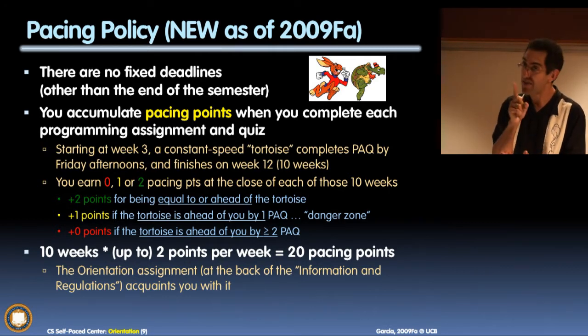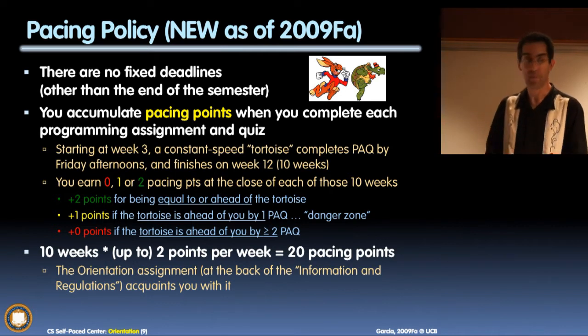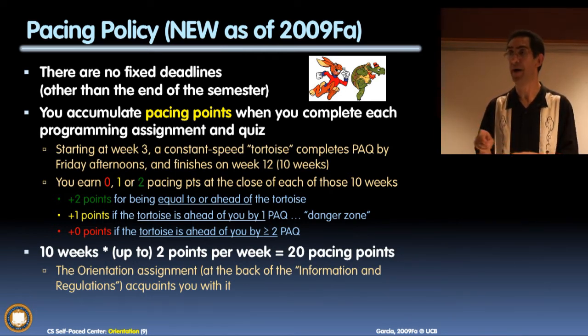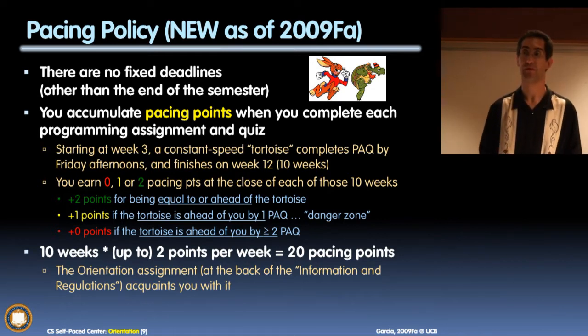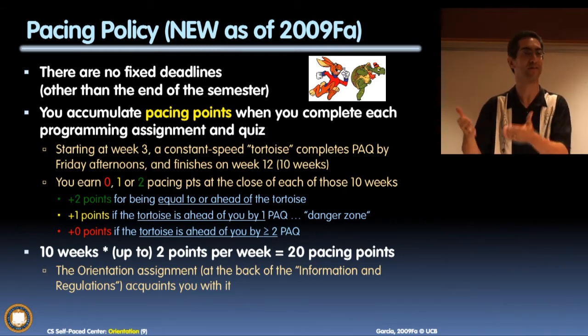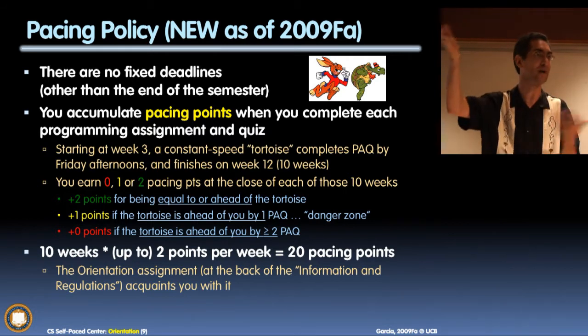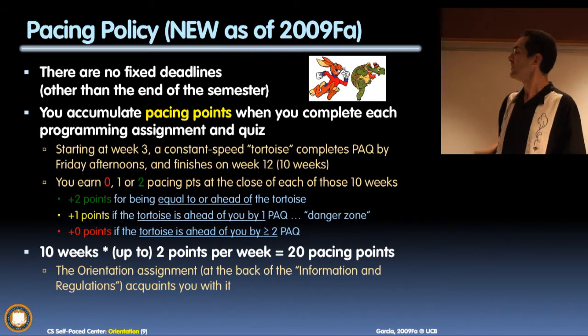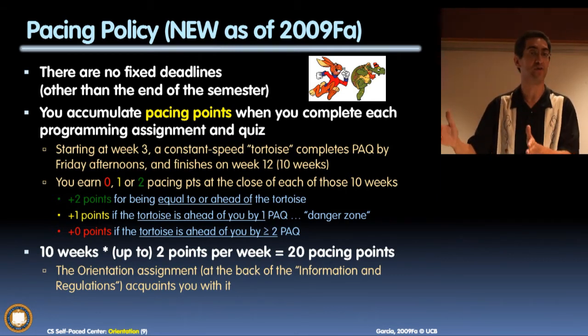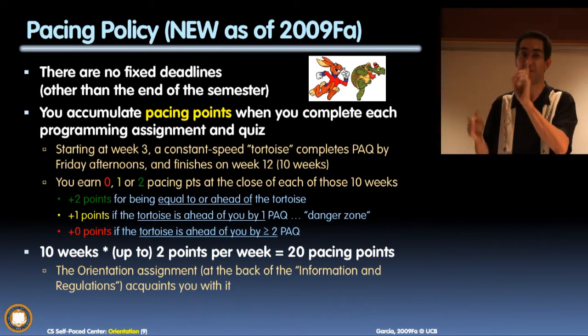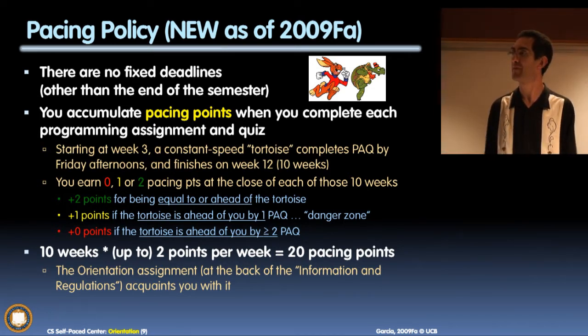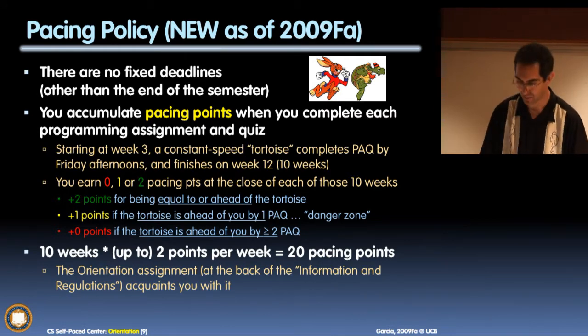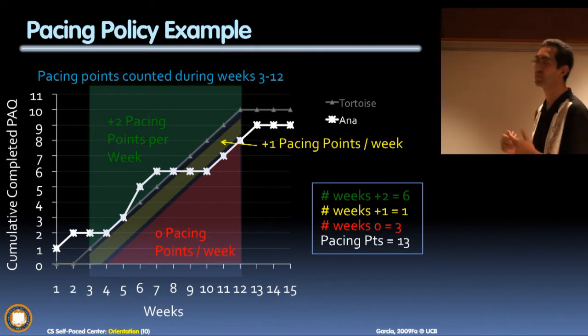Then every single week starting week three ending week 12, we look at you, we look at the tortoise. If the tortoise is beating you by more than two, which is bad, two or more, you get zero points. You have 20 points to get every week for 10 weeks, weeks three through week 12. You get either 0, 1, or 2 points. Max is 2 times 10 weeks is 20. Tortoise is beating you by more than two or equal to two, zero points. Tortoise beating you just by a little bit, that's called the danger zone, that's only one point. If you are equal to the tortoise or ahead of it like the hare was for most of the race, full two points. That's the whole pacing points.